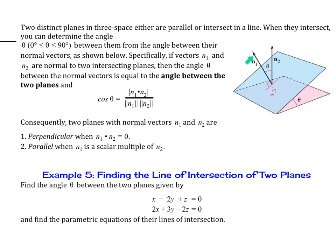Specifically, if vectors n1 and n2 are normal to two intersecting planes, then the angle theta between the normal vectors is equal to the angle between the two planes. So this angle here is equal to this angle here. We're going to use this formula: cosine theta equals n1 dot n2, all over the magnitude of n1 times the magnitude of n2.